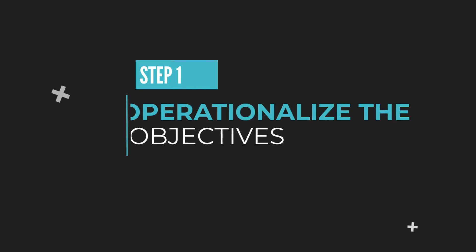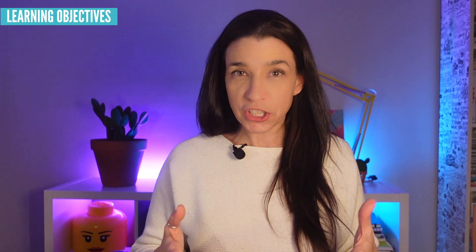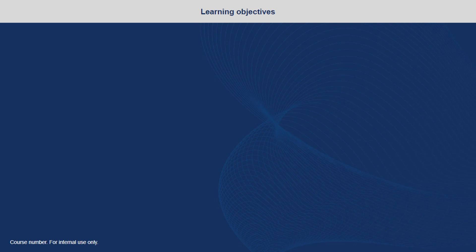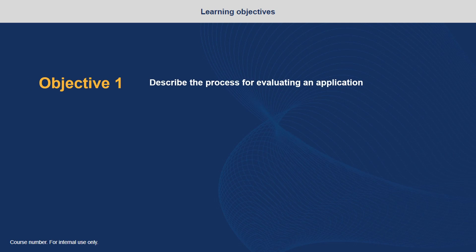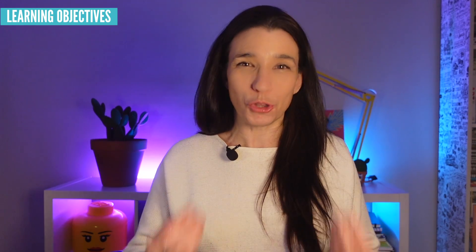So before I get to the fun stuff and gamify this, the first thing I need to do is operationalize the learning objective. Typically on a project like this, I'll be given learning objectives like 'loan officers will know the process for evaluating an application and be familiar with all policies.' But it's not enough to know these things — they have to actually do it. So let's transform these into something that's measurable and observable.